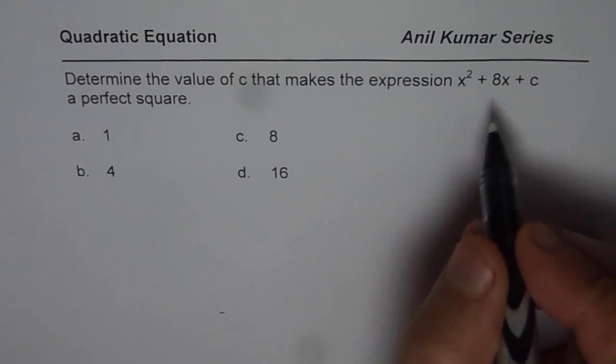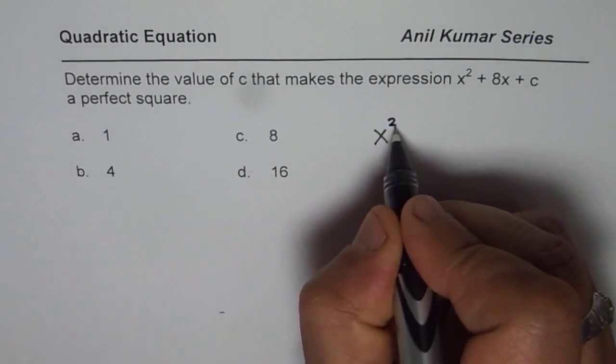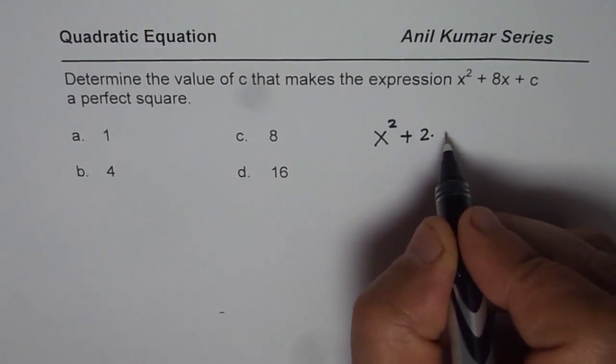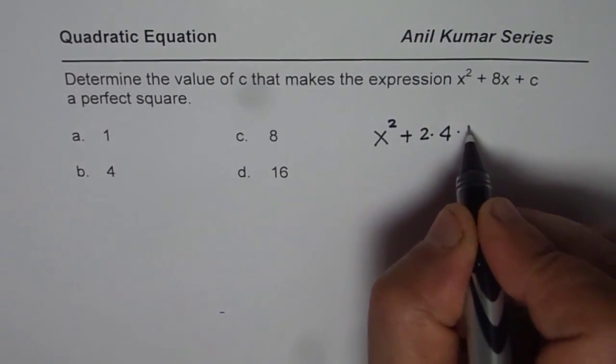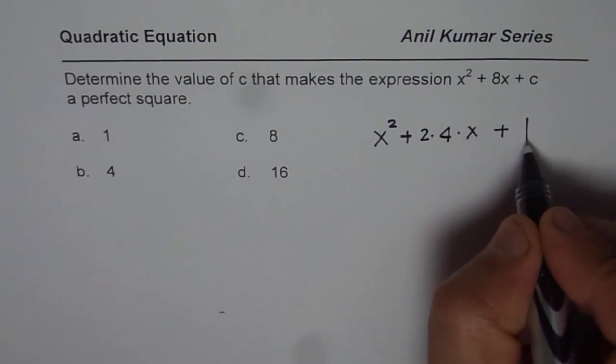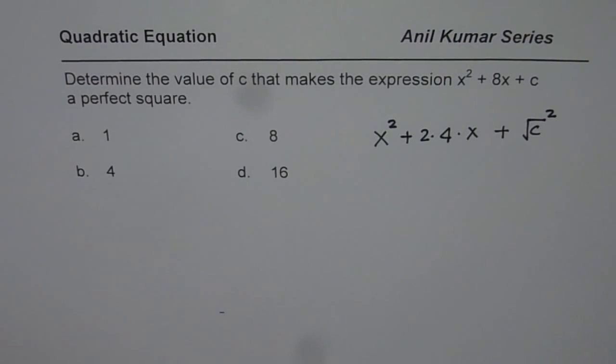Well whenever you have this kind of equation I will recommend write it in this form: x² + 2 times 8 is 2 times 4 times x plus instead of C write this as square root of C squared. Right? So that is how you should write.